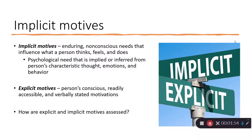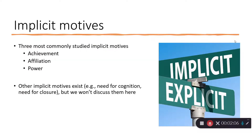Explicit motives we can ask people to self-report. Implicit motives, because they're non-conscious, we have to look at people's behavior and infer from it. The three most commonly studied implicit motives are achievement, affiliation, and power. These are the three we're going to focus on in this lecture series, though there are others such as need for cognition and need for closure.